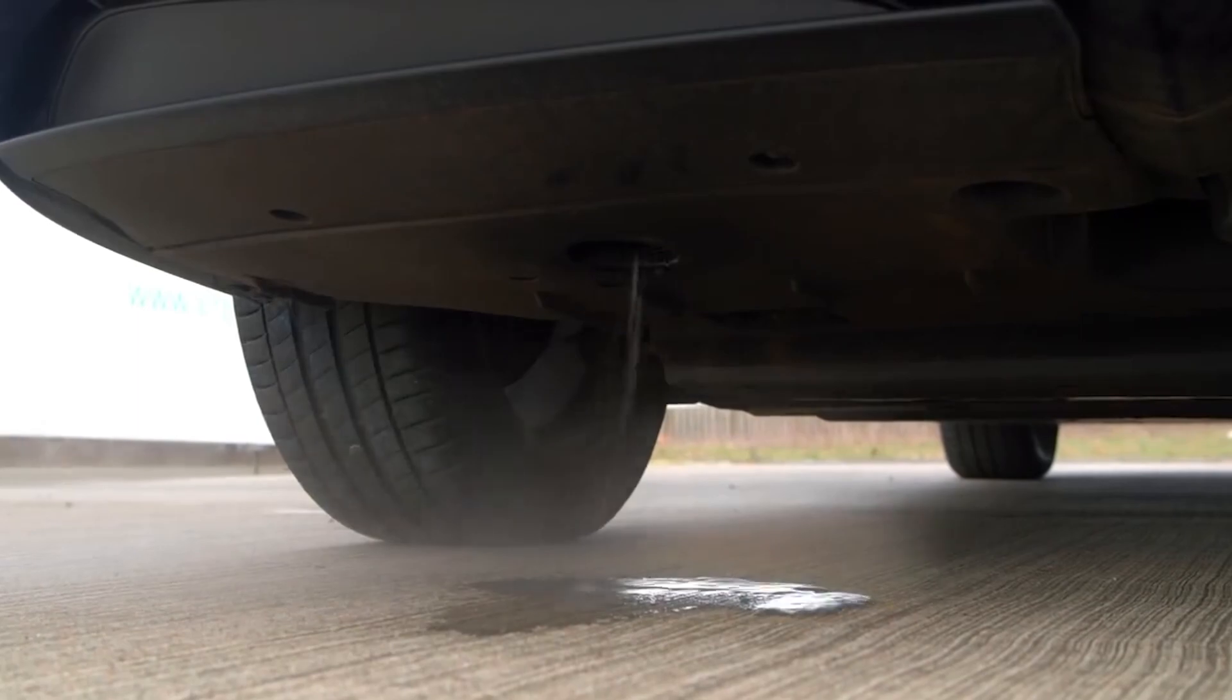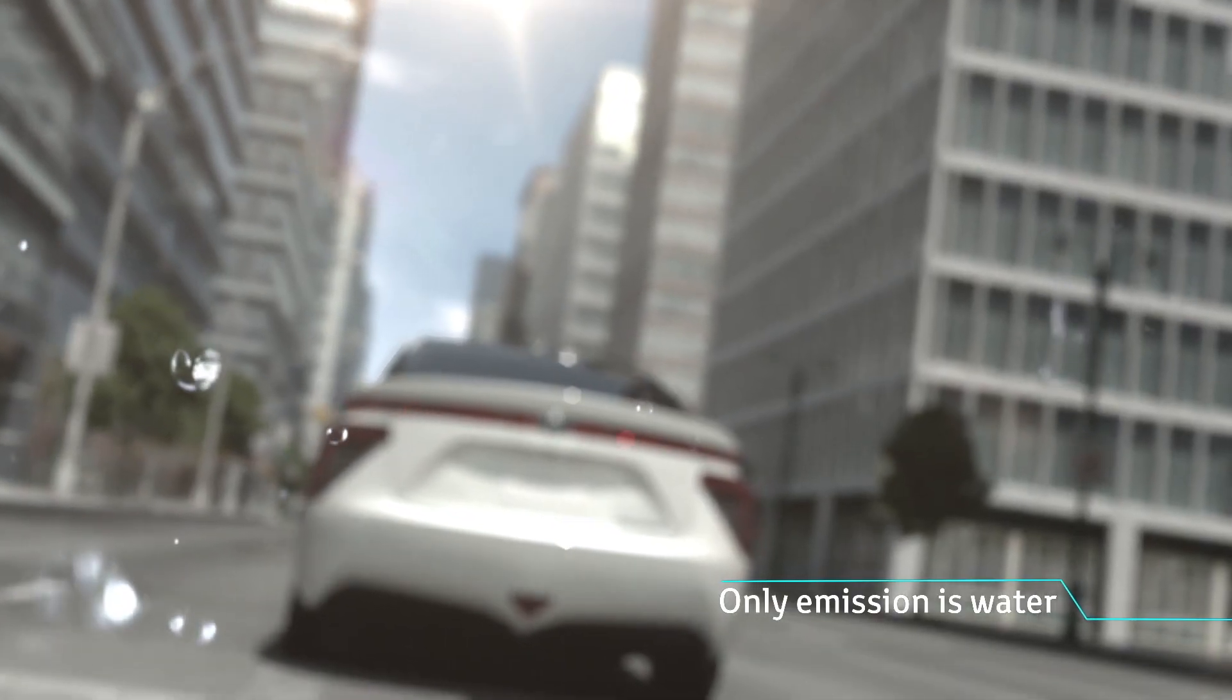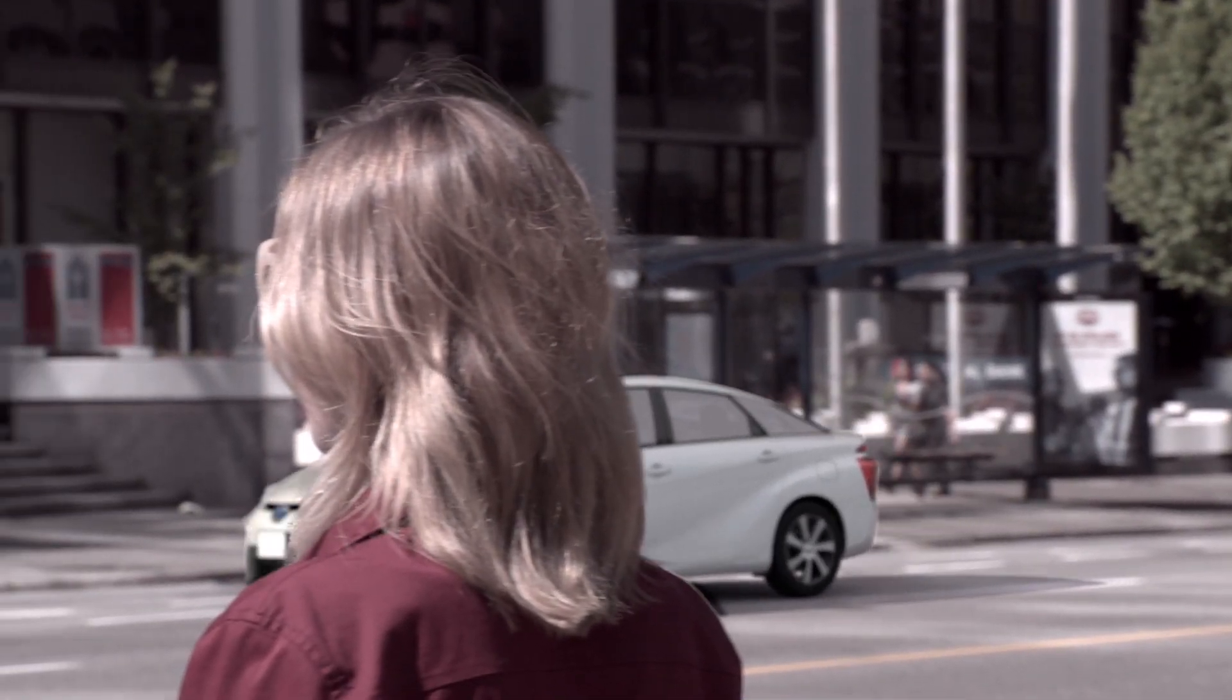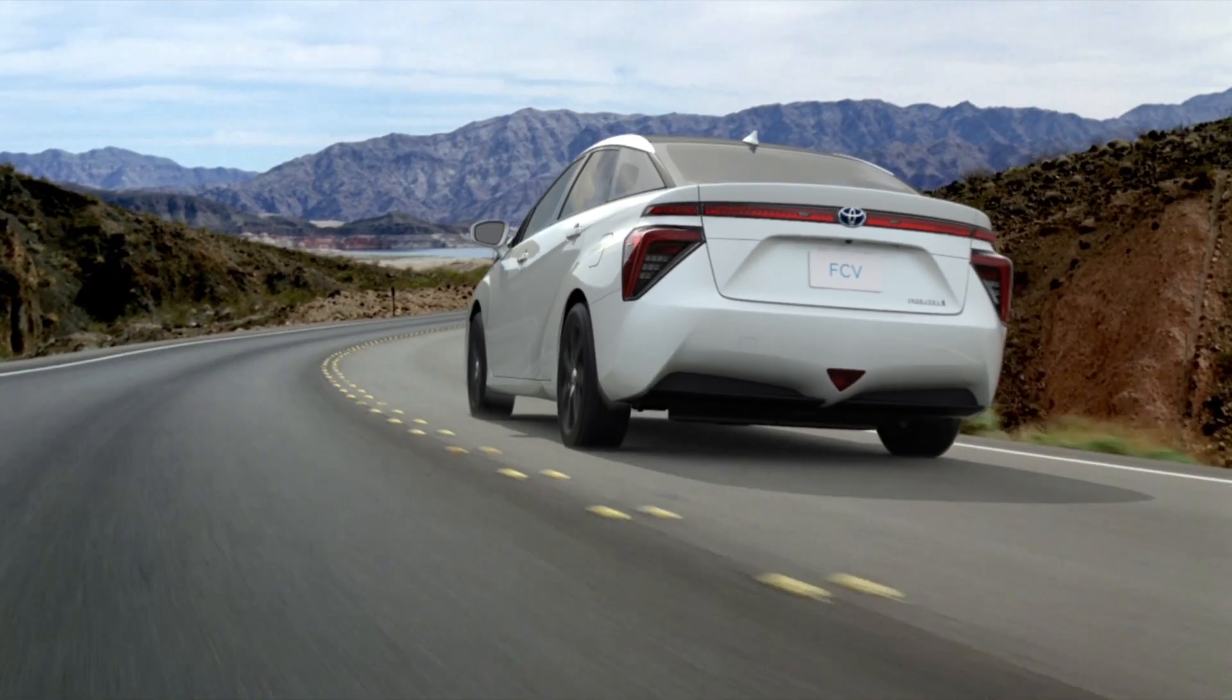Water or vapor leaves through the tailpipe as the only emission. The Toyota Mirai is a production vehicle on sale in select areas in Canada, where hydrogen infrastructure has been introduced.